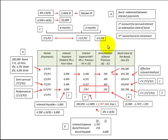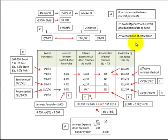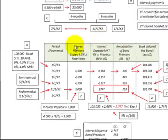In this presentation we're going to look at a bond regime between interest payments. First, we're going to account for the accrued interest at the redemption date of the bond, and then second, we're going to record the bond at its retirement or redemption date.